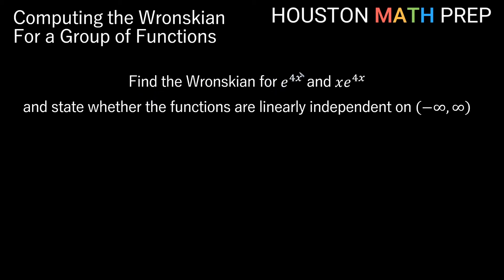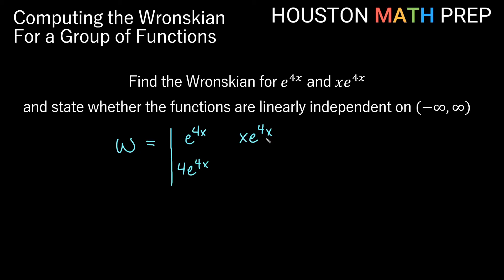Here we want to find the Wronskian for the functions e^(4x) and xe^(4x), and state whether they are linearly independent on the real number line. Computing our Wronskian, that will be the determinant — we can use straight line brackets around our matrix. Our first row is e^(4x) and xe^(4x). Our second row will be their derivatives: the derivative of e^(4x) is 4e^(4x), and the derivative of xe^(4x) by the product rule is e^(4x) + 4xe^(4x).